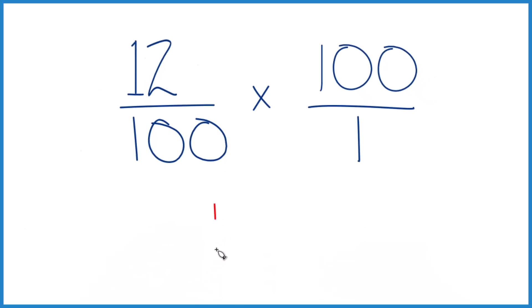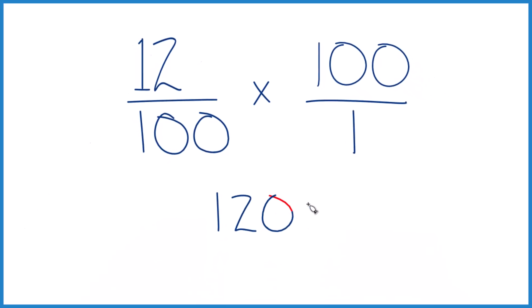12 times 100, that's 1,200. And then 100 times 1, that's 100. And if you divide 1,200 by 100, you get 12, just like we got before. So 12% of 100, it's 12.